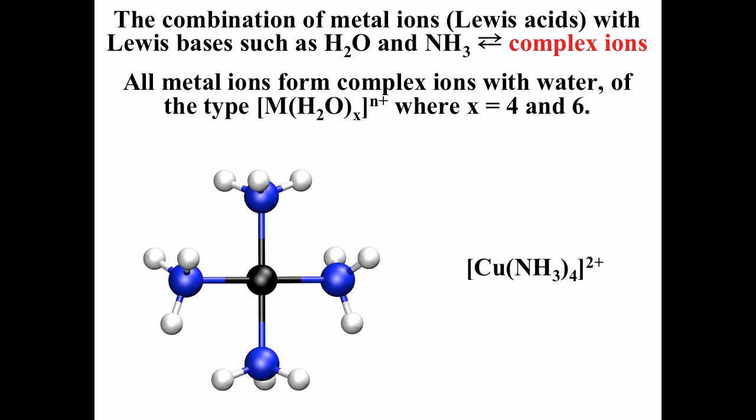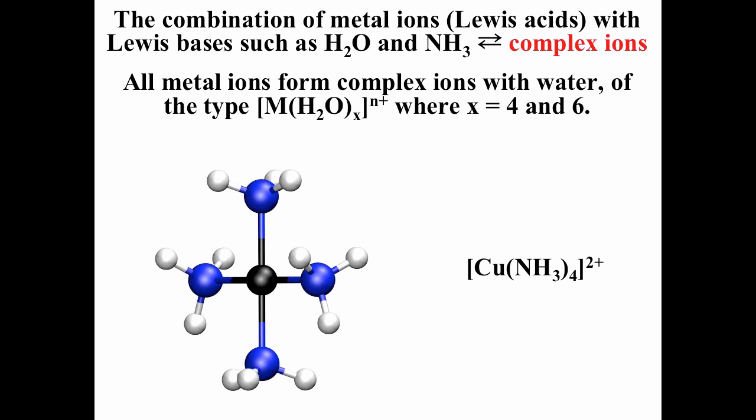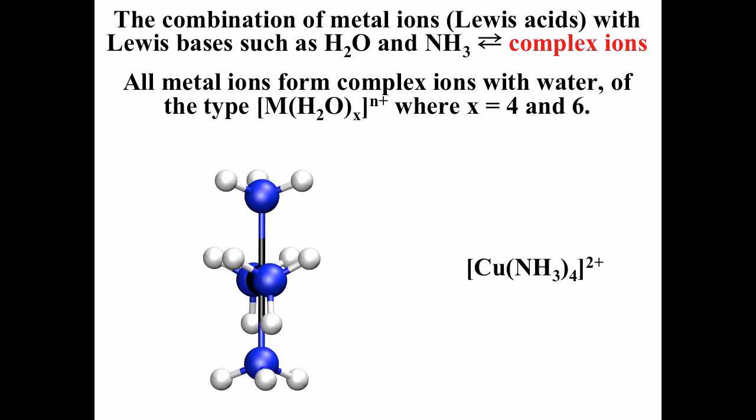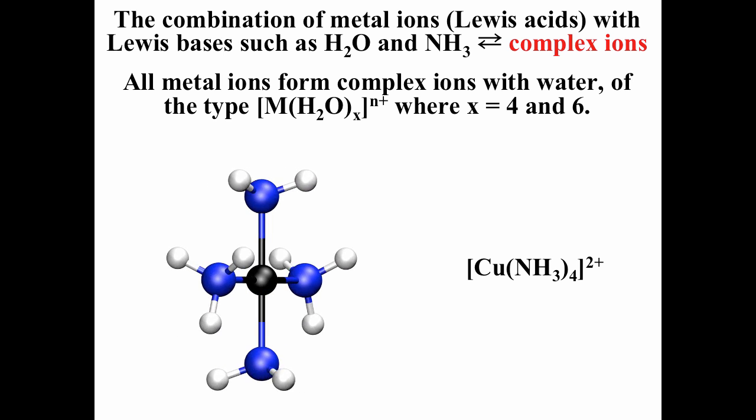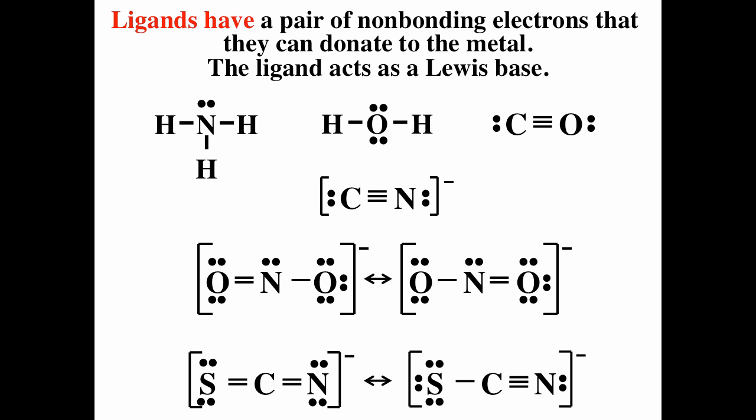There are many different metal complexes. Here we have copper surrounded by four ammonia groups — the ligands are on the outside and the metal ion is in the center. Ligands are Lewis bases, so they must have lone pairs. Ammonia has a lone pair on the nitrogen, water has two lone pairs on the oxygen, carbon monoxide has lone pairs on each side, and the cyanide ion, nitrite ion, and thiocyanate ion all have lone pairs and can behave like Lewis bases.